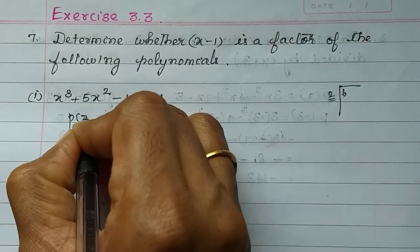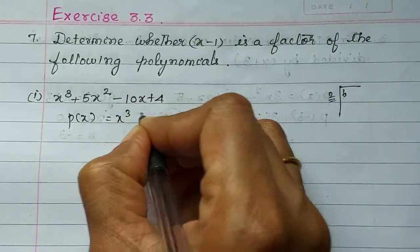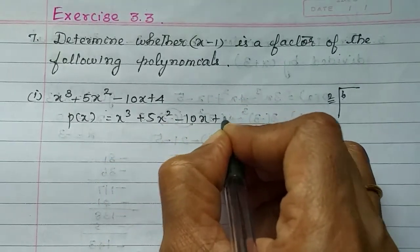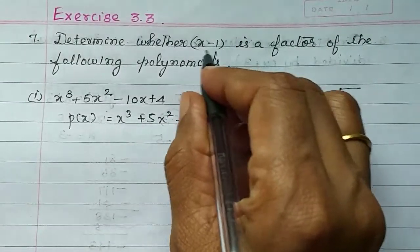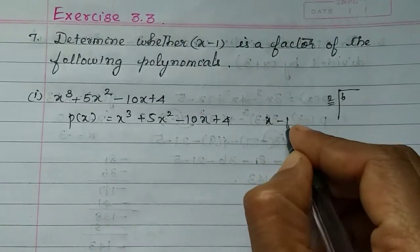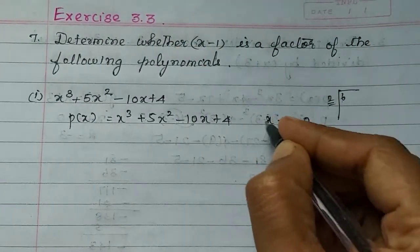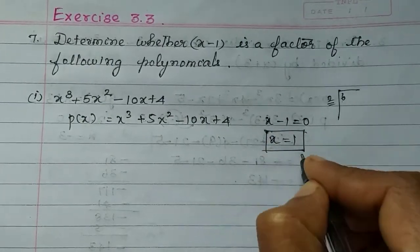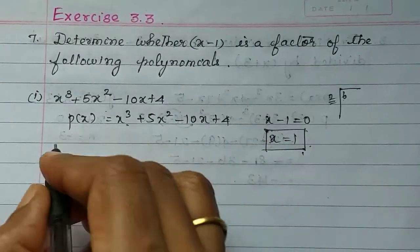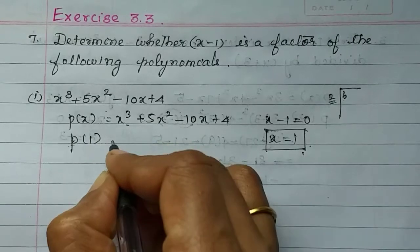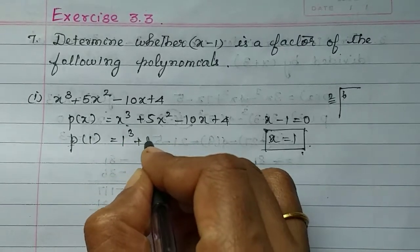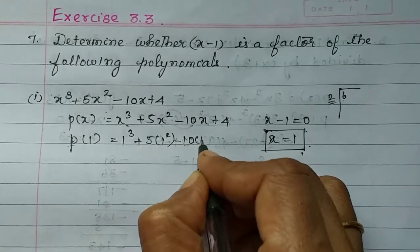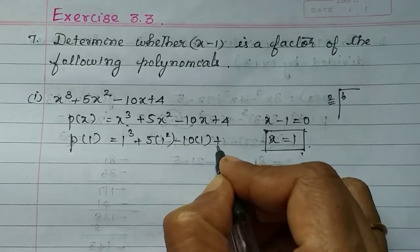P of x is equal to x cube plus 5x square minus 10x plus 4. Now, if you get the factor, you get g of x — you can set x minus 1 equal to 0 directly. So x is equal to 1. Let's substitute the x value: P of 1 is equal to 1 cube plus 5 times 1 square minus 10 times 1 plus 4.